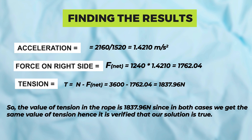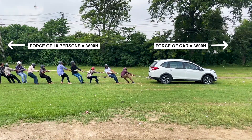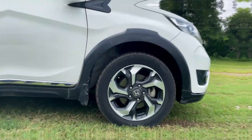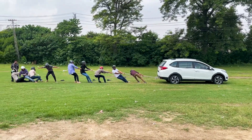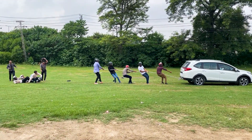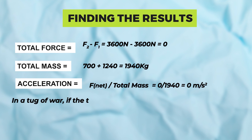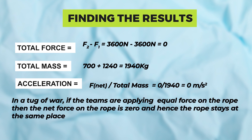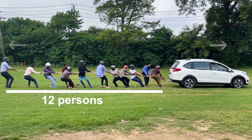In the third scene, 10 persons on the left side are pulling the rope, and on the right side the car is trying to accelerate but is unable to do so. We can notice the car remains stationary and the car tires start spinning. Total force: F2 minus F1 equals 3600 N minus 3600 N, so total force is zero. Total mass: 700 plus 1240 equals 1940 kg. Acceleration equals zero over 1940, which equals zero m/s². In a tug of war, if teams apply equal force the net force is zero and the rope remains stationary while the car tires spin.